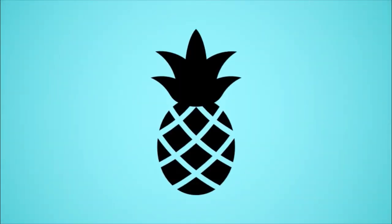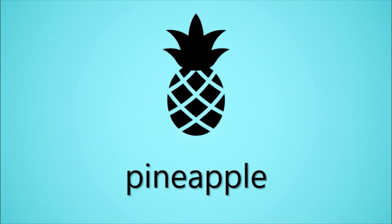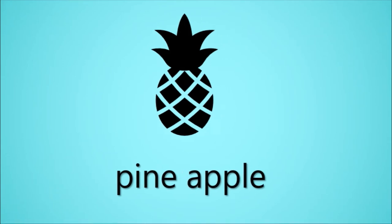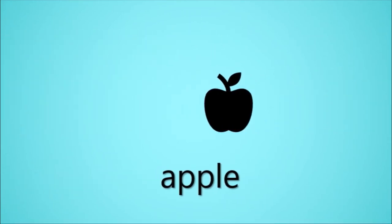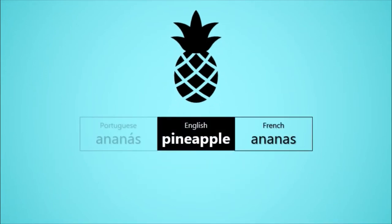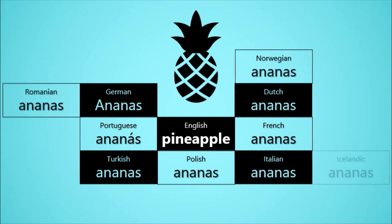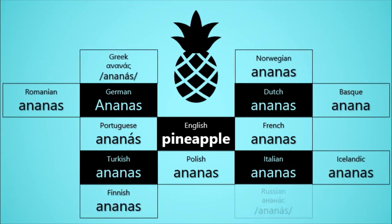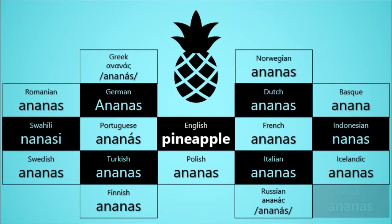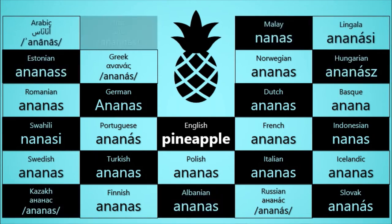This, in English, is called a pineapple. Quite a strange name, since it looks nothing like an apple. But pineapple is an even stranger name if you think about this. While we call it a pineapple in English, countless other languages across continents and language families seem to have a common name for it – ananas, or something along those lines – making English the glaring outlier.